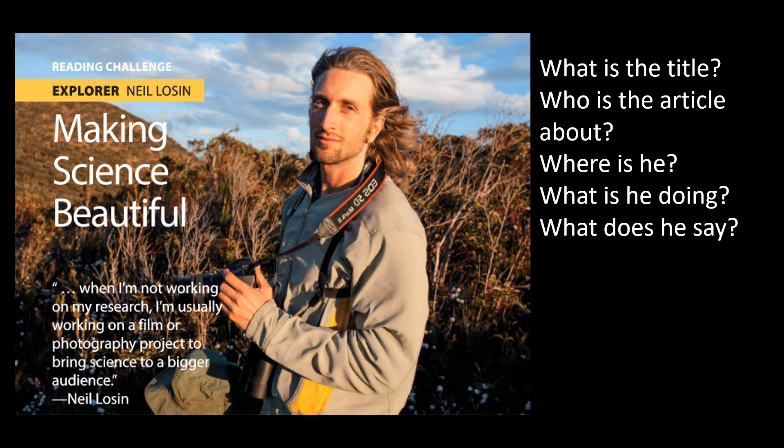On page 34, you see this photograph. What is the title? Can you find it? It's towards the top on the left. You find it in white type: Making Science Beautiful. Who is the article about? Can you find his name? It's in the yellow ribbon after the word Explorer. His name is Neil Lawson.